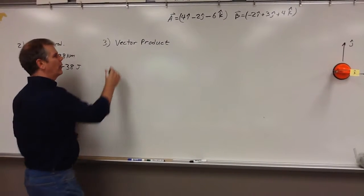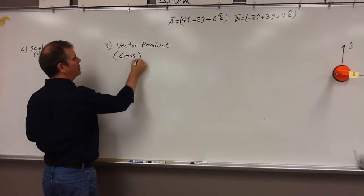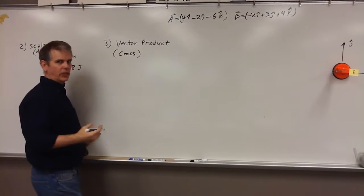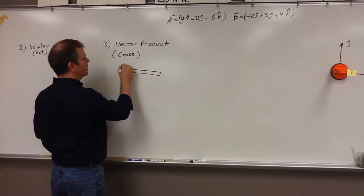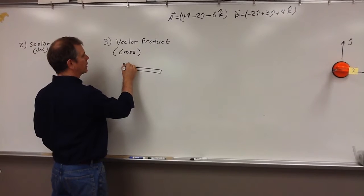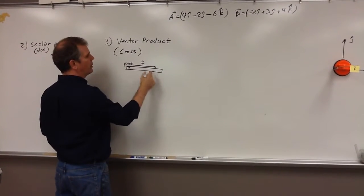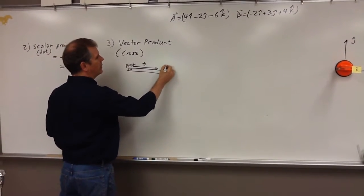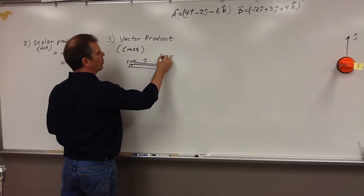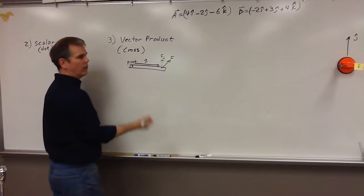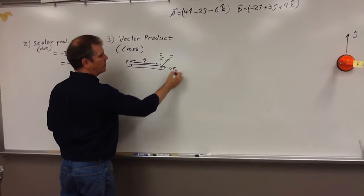Now we're going to do a vector product, otherwise known as a cross product. Cross product is like torque, where only the perpendicular components matter. So if this is the pivot, this is what's known as R, the distance from the pivot, and this is your force. Only the perpendicular force provides torque. The parallel force just pulls on the pivot.